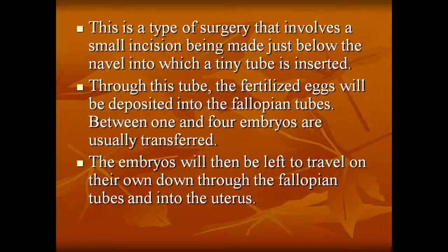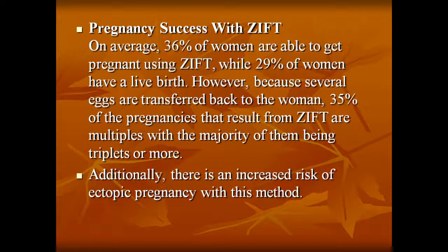Pregnancy success rate with ZIFT: on average, 36 percent of women are able to get pregnant using ZIFT while 29 percent have a live birth. However, because several eggs are transferred, 35 percent of pregnancies from ZIFT are multiple pregnancies, with the majority being triplets or more. Additionally, there is an increased risk of ectopic pregnancy with this method.